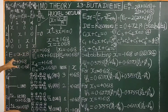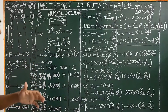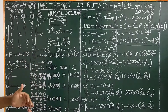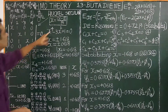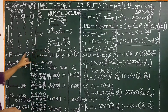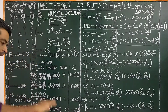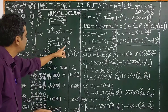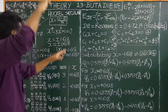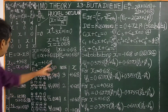Now, since x = (α − E) / β, rearranging gives E = α − xβ. Substituting the four x values, the four energy levels are: E1 = α + 1.618β, E2 = α + 0.618β, E3 = α − 0.618β, and E4 = α − 1.618β.